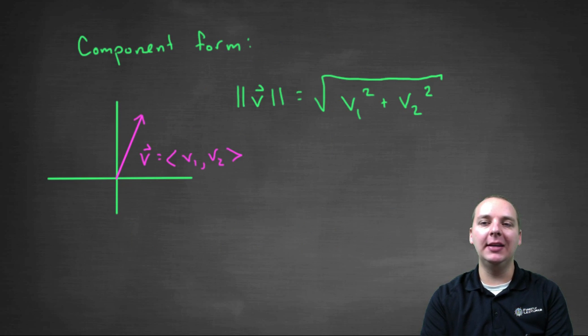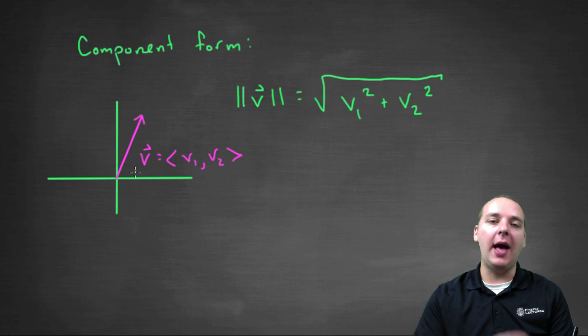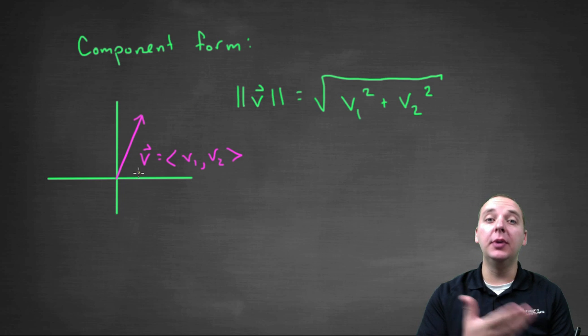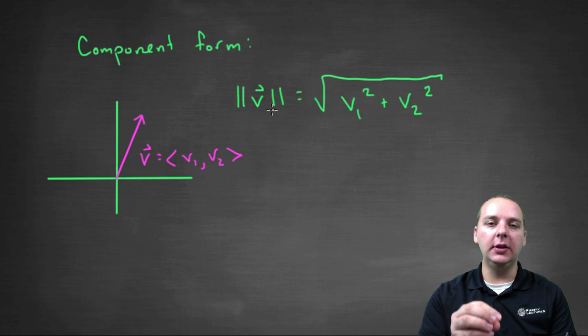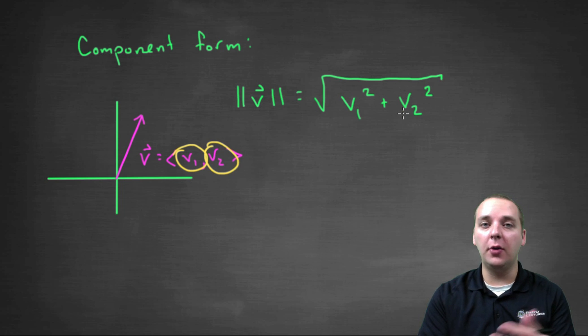If your vector is written in component form, then you don't have an initial point. Well you do, but it's zero, zero. And so those terms drop out of the formula. So this is the one that's more commonly used, is we would say that the magnitude of v is the square root of v1 squared plus v2 squared, because the other two terms that are in the formula are both zero, so they don't really show up.